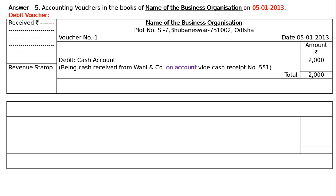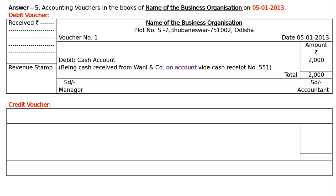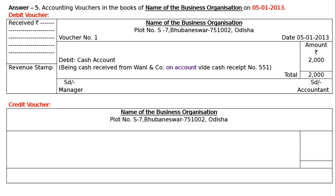Total the amount column — rupees 2000. Towards the end of the left side write 'SD Manager' for the signature of the manager, and towards the end of the right side write 'SD Accountant' for the signature of the accountant. Then for the credit voucher: name of the business with address, voucher number one on the left side, and date 5th January 2013 on the right side.